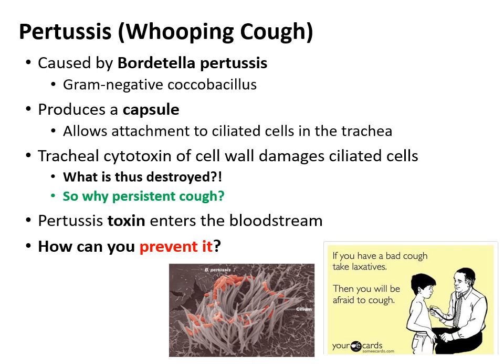The toxins from pertussis can enter the bloodstream, making it more problematic than, say, just a sore throat. The good thing is pertussis can be prevented — the DTaP vaccine, same one that covers diphtheria and tetanus. Also remember that with pertussis, the ciliary escalator that's destroyed is part of the innate immune system — any of those barriers to infection are innate immune system.